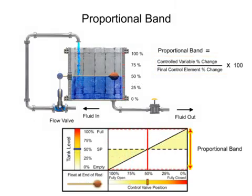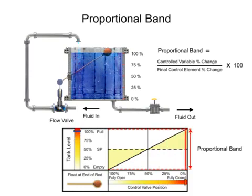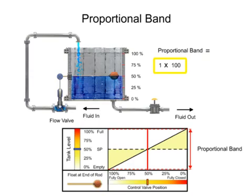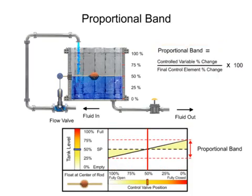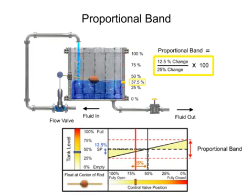The width of the proportional band determines how much of a controlled variable change is required to cause the final control element to move by a determined amount. By placing the float on the end of the rod, the fluid level has to change 100% to cause the final control element to change 100%. By placing the float at the center of the rod, the fluid level has to change 12.5% to cause the final control element to change 25%. The width of the proportional band is reduced by half.